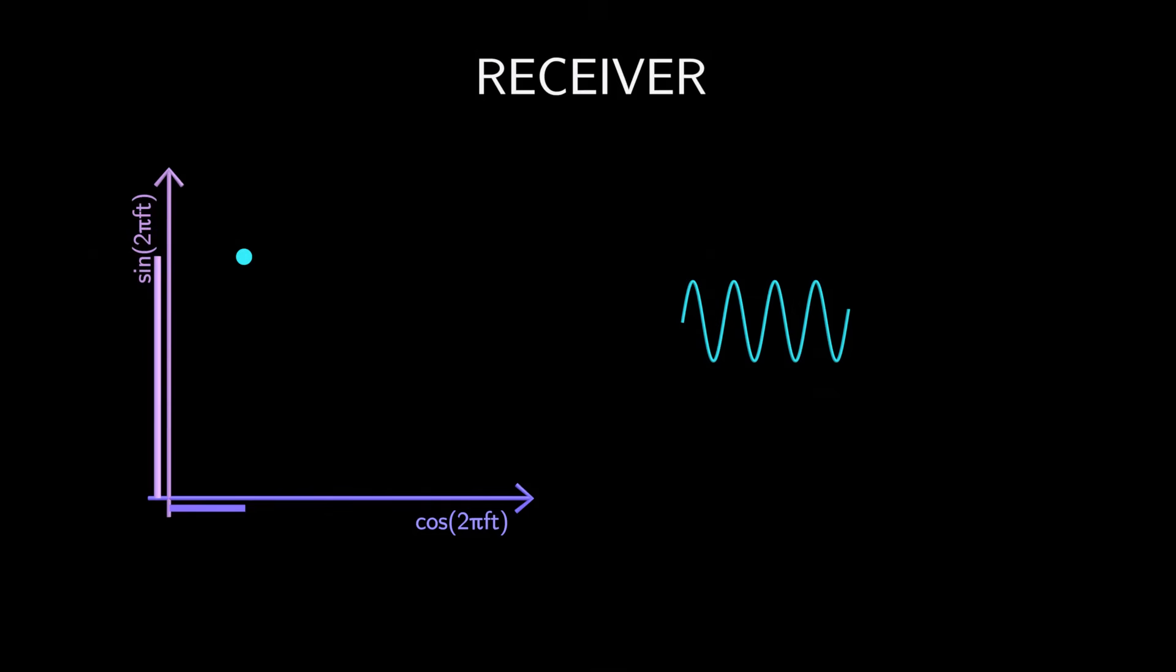If the received signal is the same as the transmitted signal, then the receiver gets the same constellation points as the transmitted constellation point. But in real-world systems, things are not perfect.